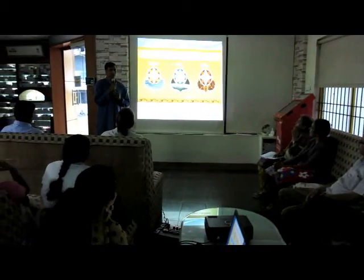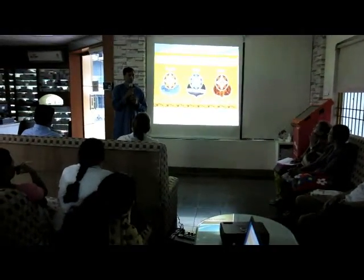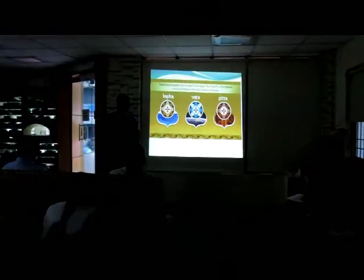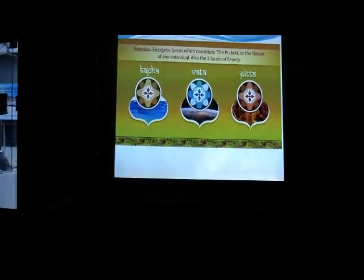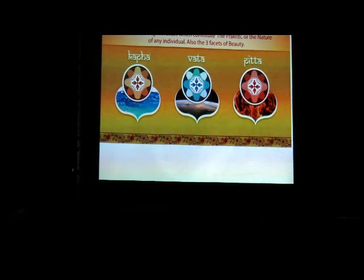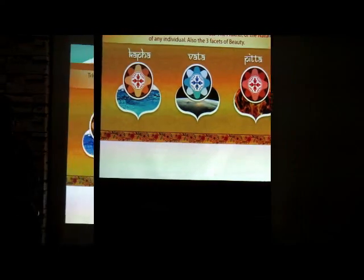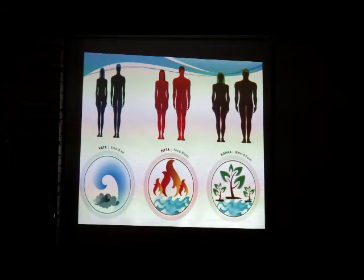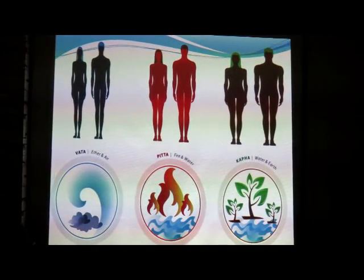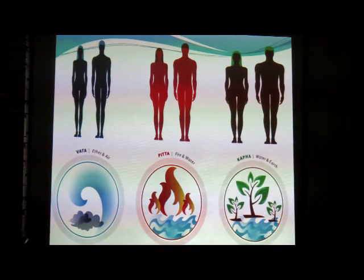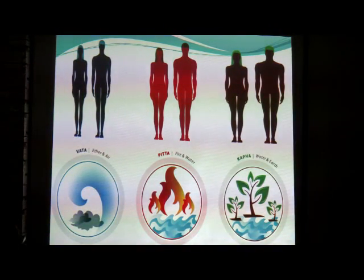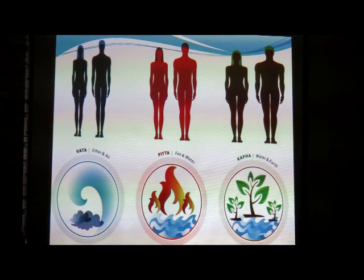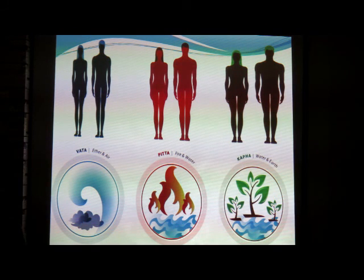The second morphology is mesomorph — people who look a little muscular, where the muscles are visible, and they are neither completely chubby nor completely skinny. They are in between. Those people are called Pitta. Vata is mainly made up of ether and air, and corresponds to slim or thin-built people.